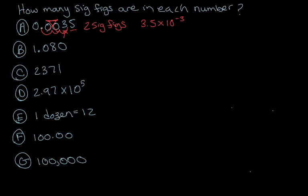For B, we have two numbers that are non-zero, so they are significant. This zero here is an interior zero, so it is significant. And this zero here is a trailing zero — it comes to the right of a non-zero number after a decimal point — so it is significant as well. That's four sig figs.